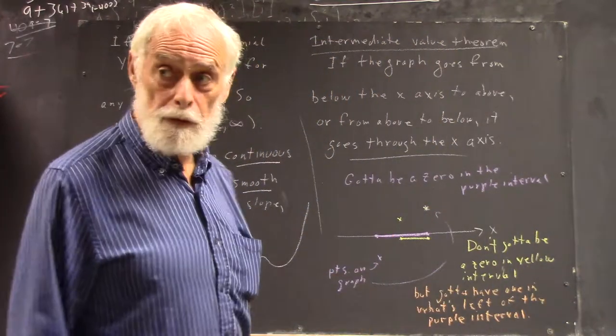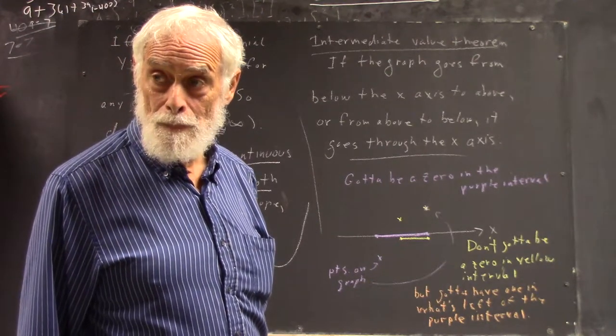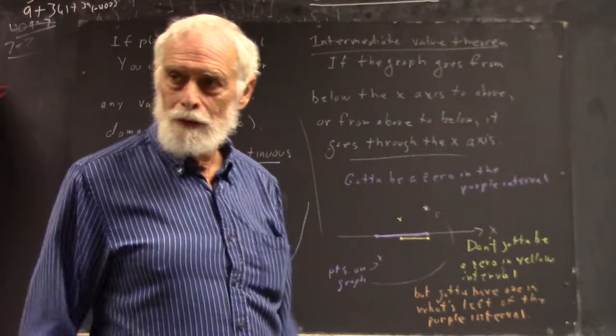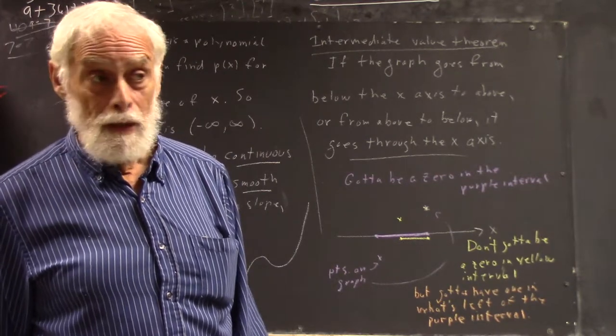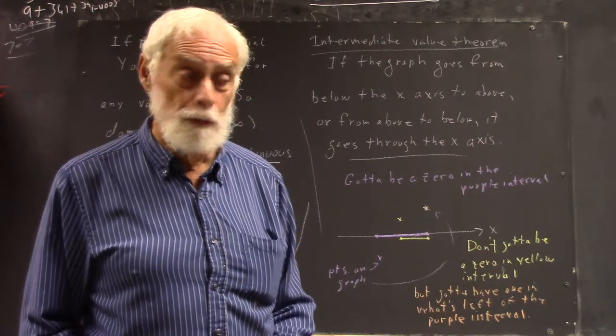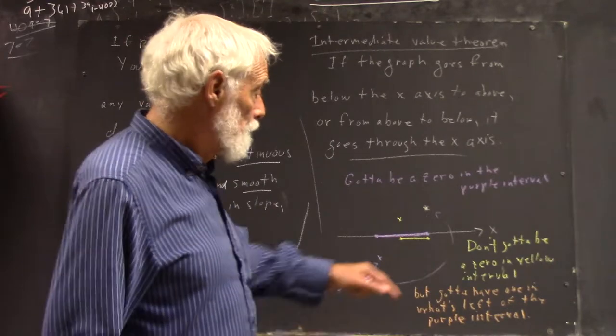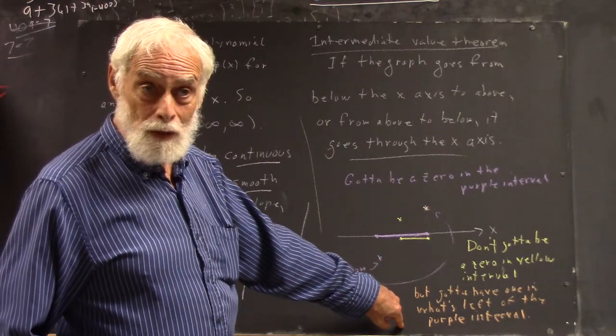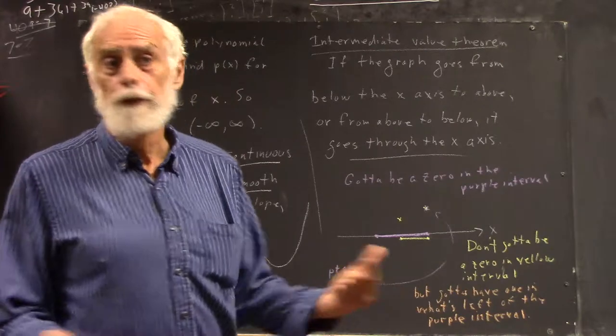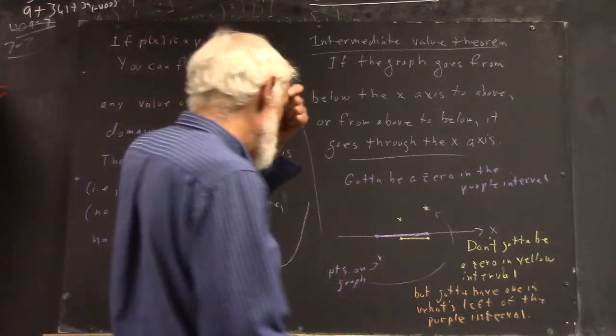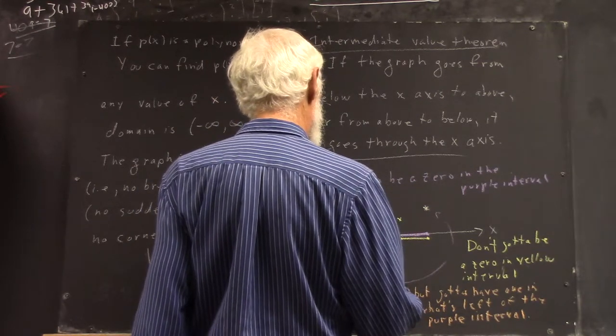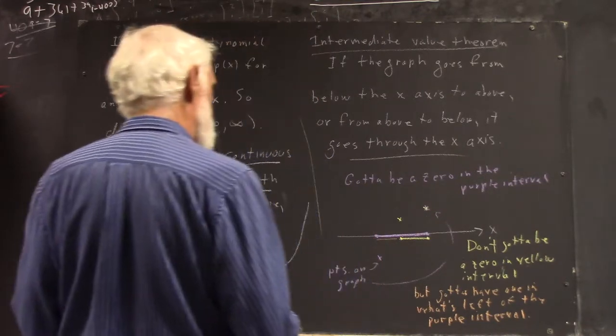It's got to have one in what's left of the purple interval. Now, it's implicit that I mean what's left of the purple interval after I take away the yellow interval. And I don't want to say that I can put that in set-theoretic terms and use a bunch of notation and vocabulary that just confuse the issue for most people, at this point. But understanding just in the vernacular what we're talking about, then later if I want to put it in a little more formal notation, you'll have the idea and you'll see what it means.